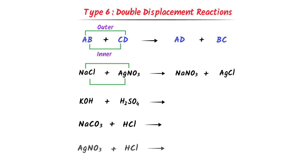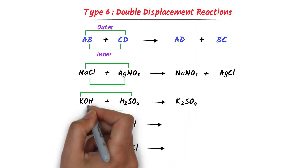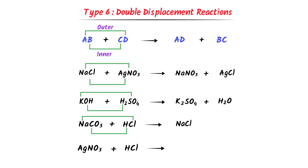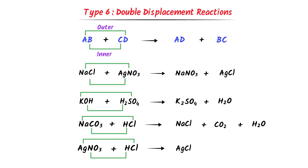Now consider these reactions — pause the video and try to predict their products. Outer with outer: potassium reacts with sulfate to give potassium sulfate; hydrogen reacts with hydroxide to give water. Inner with inner: sodium reacts with chlorine to give sodium chloride; hydrogen reacts with carbonate to give carbonic acid, which then decomposes into carbon dioxide gas plus water. Similarly, silver reacts with chlorine to give silver chloride, and hydrogen reacts with nitrate to give nitric acid, HNO₃. Using this trick, we can predict the products of any chemical reaction.